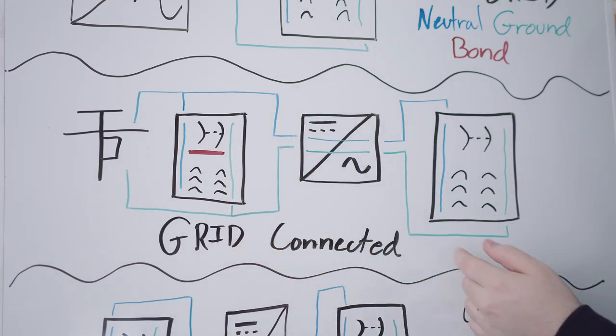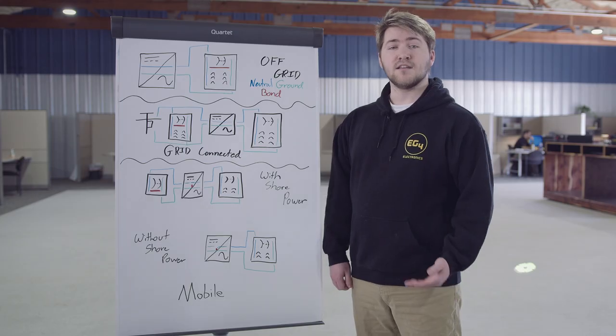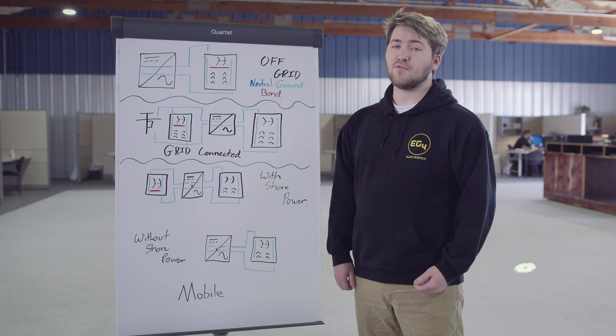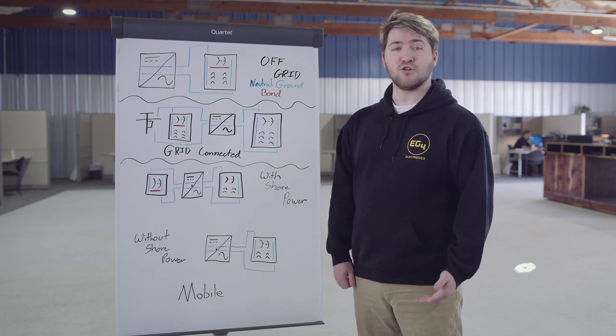This is where the default internal bond screw would normally be applicable to create a bond since you will no longer have access to the grid. The concern with this arises when you're operating in inverter mode with multiple inverters, as you'll now have two or more bonds on the same ground which could cause objectionable current.